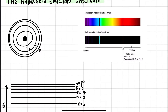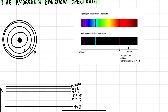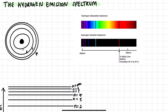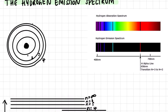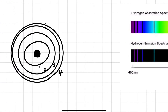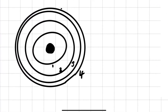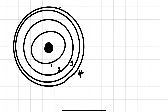Today we're going to be looking at the hydrogen emission spectrum. This is one of the first things you'll learn in chemistry, so it's important that you understand this well. To understand the hydrogen emission spectrum, first we need to look at the basic Bohr model.